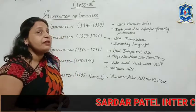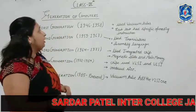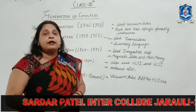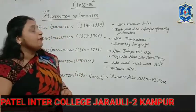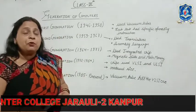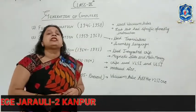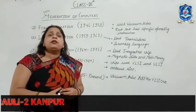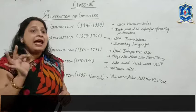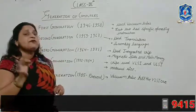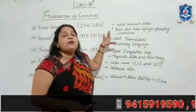First, I will explain the 1st generation, which ran from 1946 to 1958. In this generation, computers used vacuum tubes. Vacuum tubes were very large, and placing them in a computer was very difficult. They also broke down easily, and each task had to follow specific instructions.